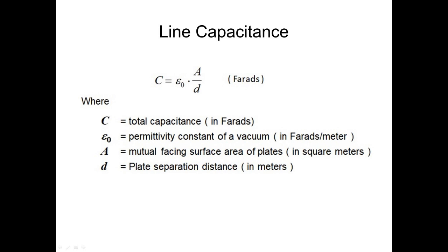In one sense, these parallel conductors actually form the plates of an oblong capacitor, whose capacitance value can be found with this equation. C equals epsilon zero times A divided by D, expressed in farads. Where C is the total capacitance expressed in farads, epsilon sub zero is the permittivity constant of a vacuum expressed in farads per meter, A is the mutual facing surface area of the two plates expressed in square meters, and D is the plate's separation distance expressed in meters. In this case, A equals 3.0 times 10e plus 8 square meters, D equals 1.0 meter, and epsilon sub zero equals 8.85 times 10e minus 12 farads per meter. These numbers yield a total capacitance for this line of 2.655 times 10e minus 3 farads.